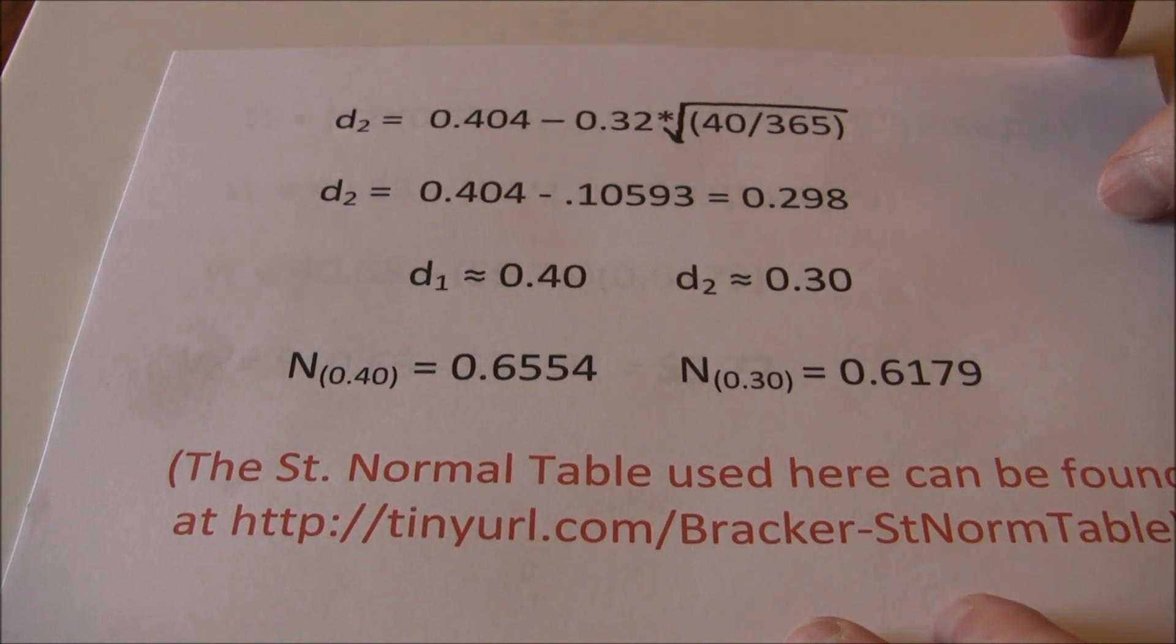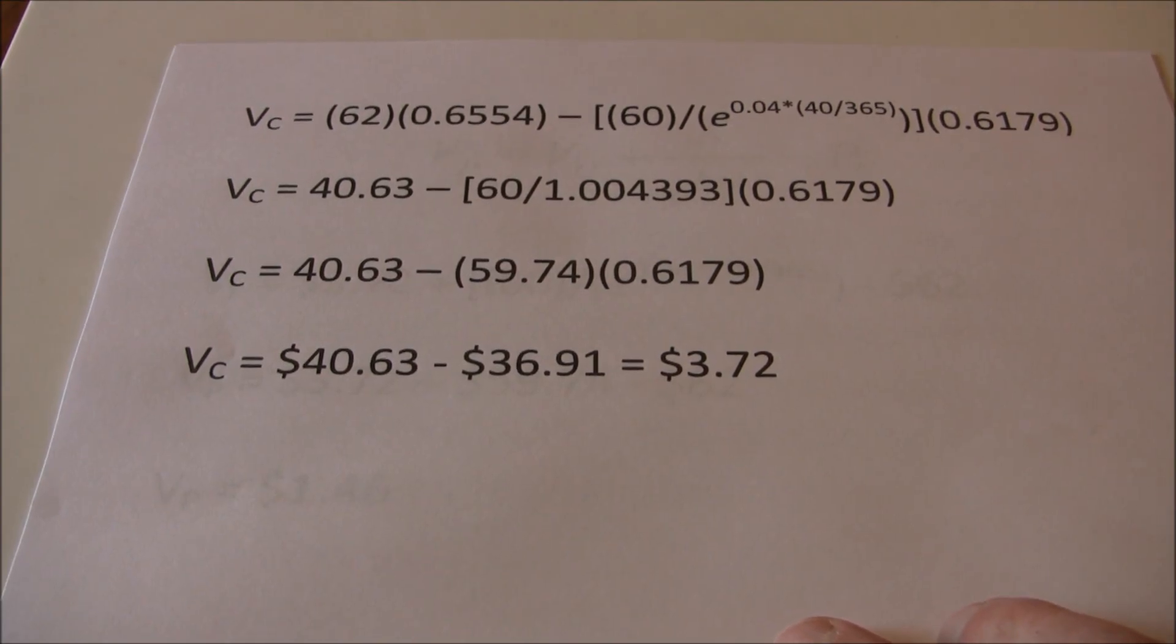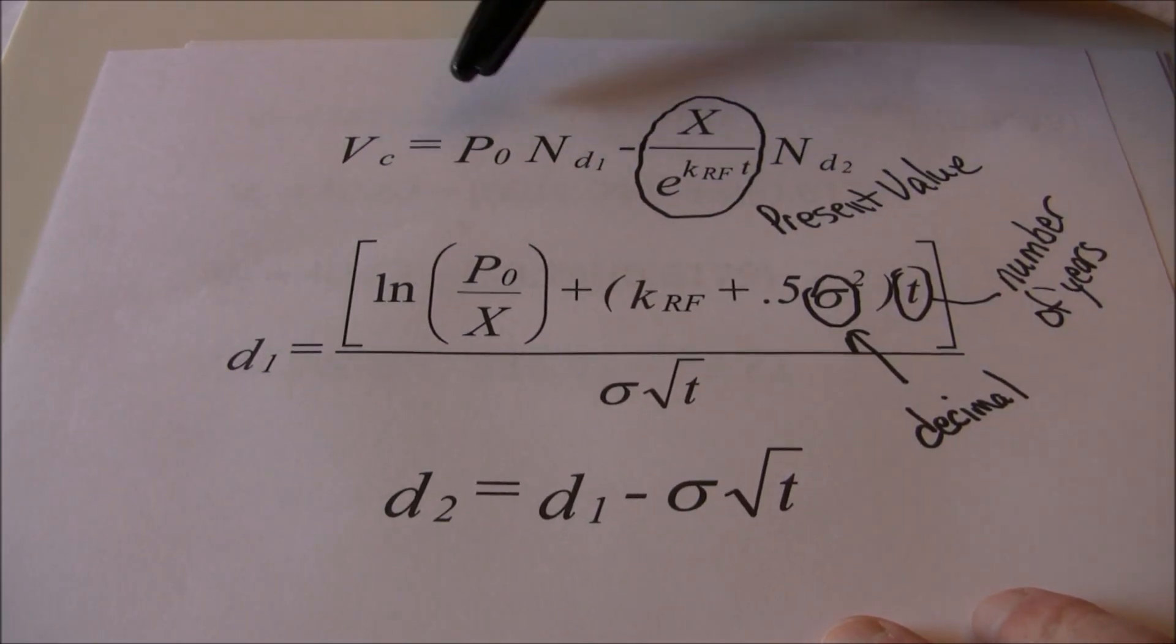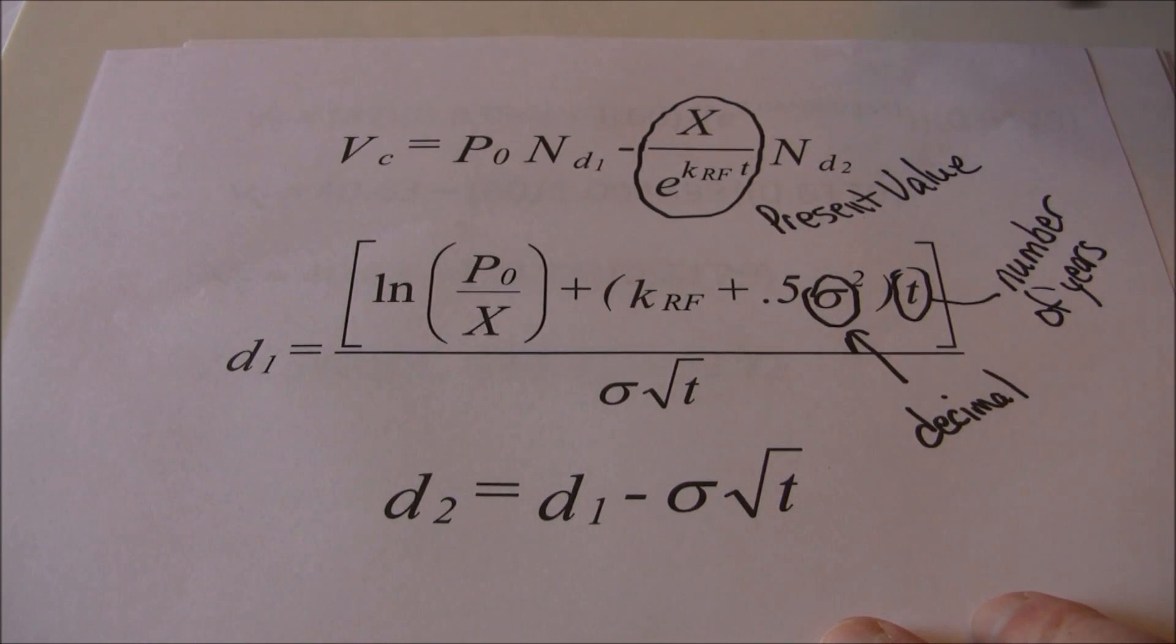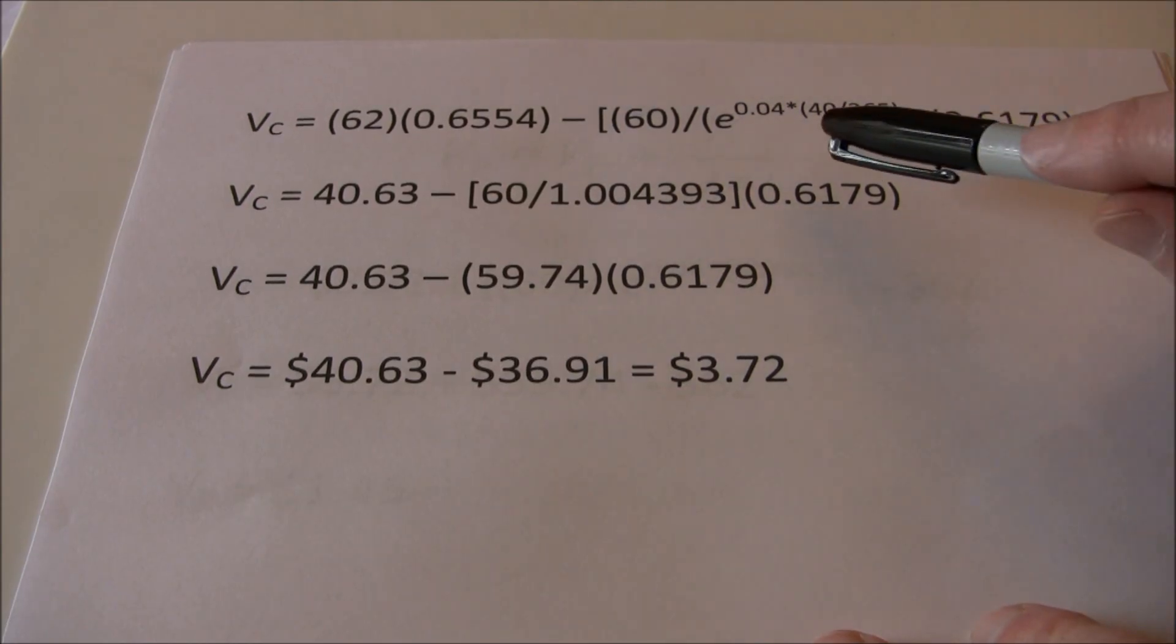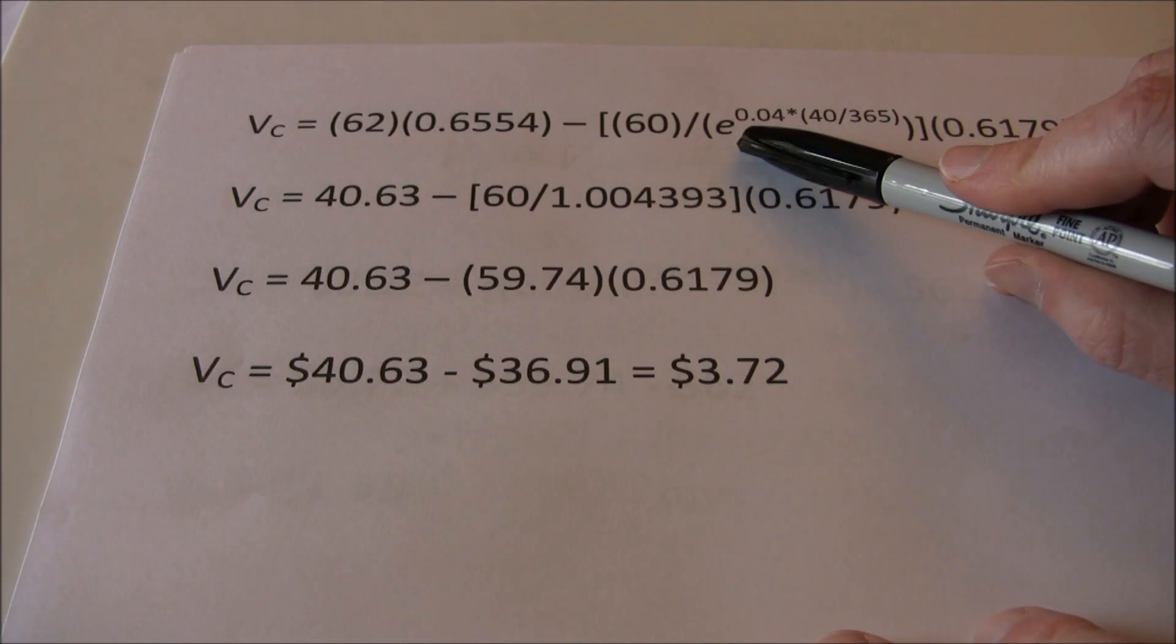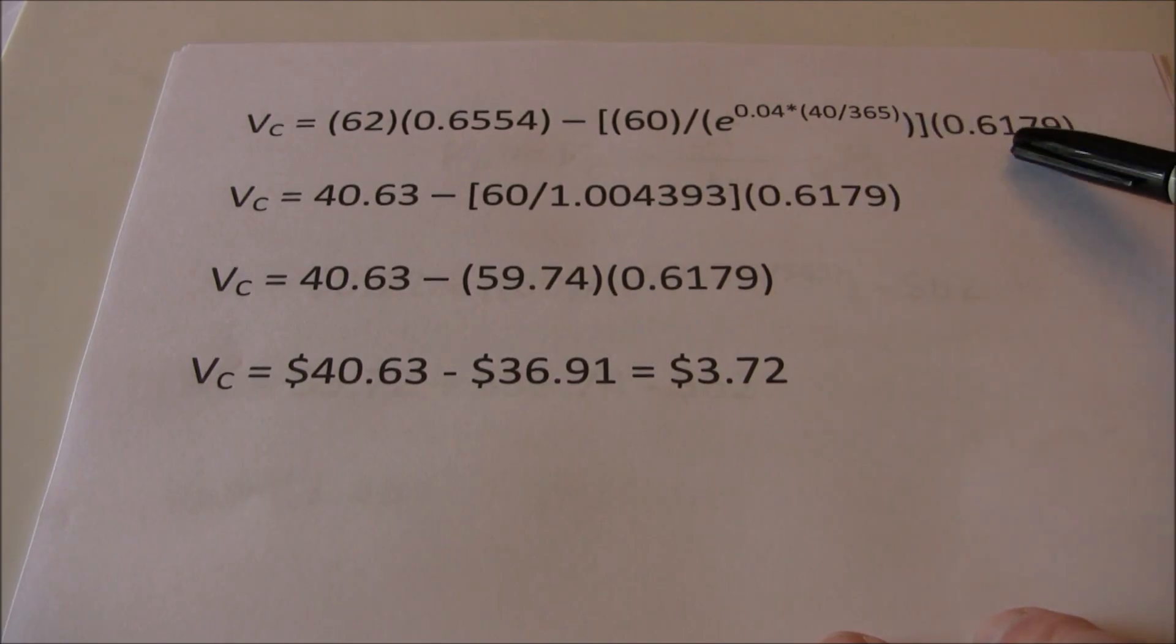Once we have those, now we can go back to the value of the call formula. If you remember when we introduced the formulas, we said that the value of the call is equal to P0 times N(D1), which we've now looked up, present value of the exercise price, and N(D2). So we set those in, P0 times our N(D1), present value of the exercise price. Exercise price is 60. To get the present value, we take the risk-free rate times time, press the E button on your calculator. It's referred to as the exponential. It should be a little italicized E somewhere on your calculator, something like E to the X. So figure out what X is, and then press your E to the X button. And then we multiply by N(D2).